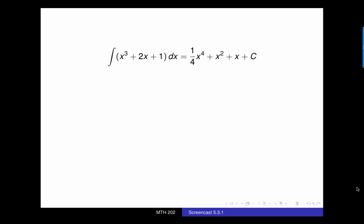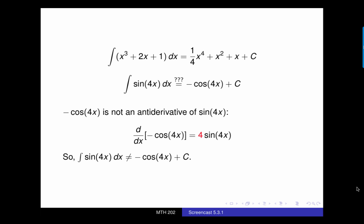But for other functions, the rules for anti-differentiation aren't as simple. For instance, what is the indefinite integral of sine of 4x? We might be tempted to say it's negative cosine of 4x, because an antiderivative of sine of x is negative cosine of x. But negative cosine 4x is not correct, because this is not an antiderivative.